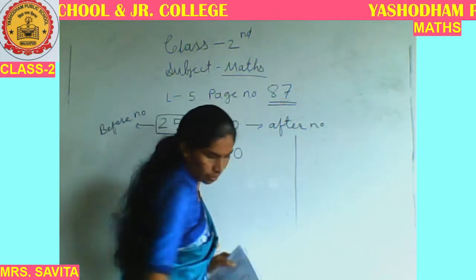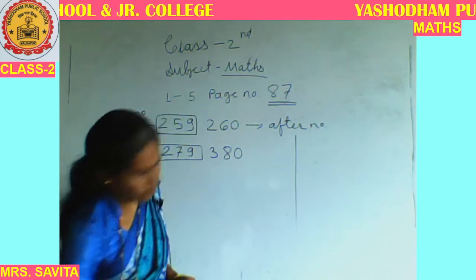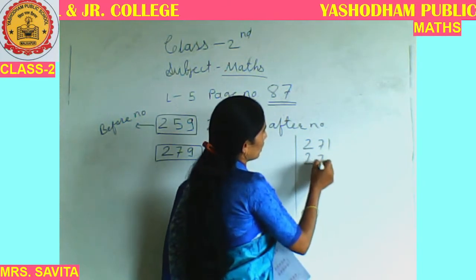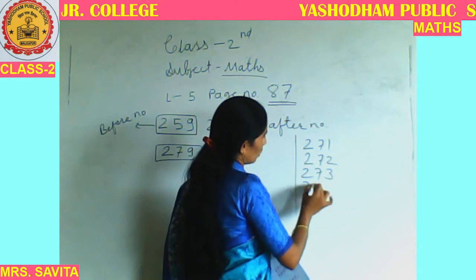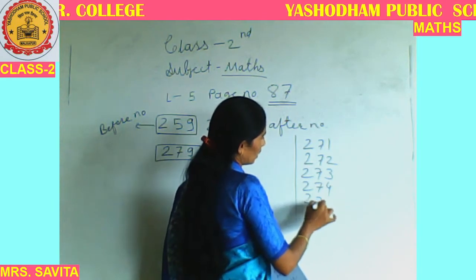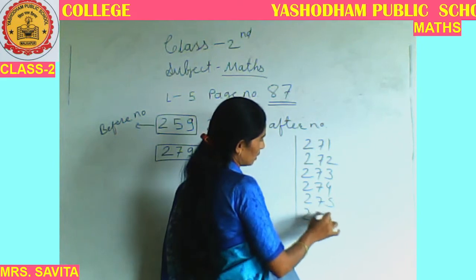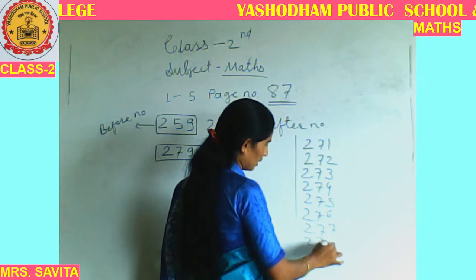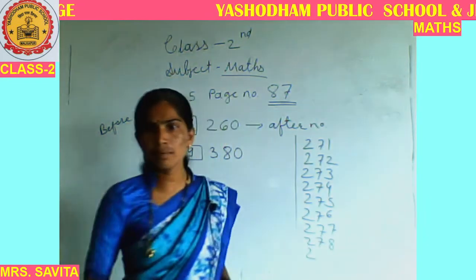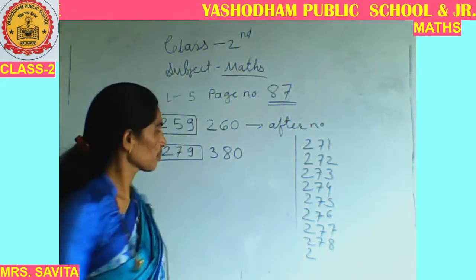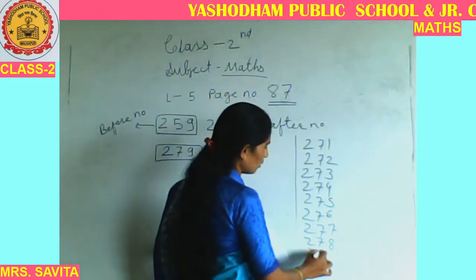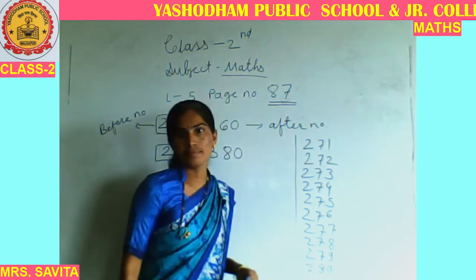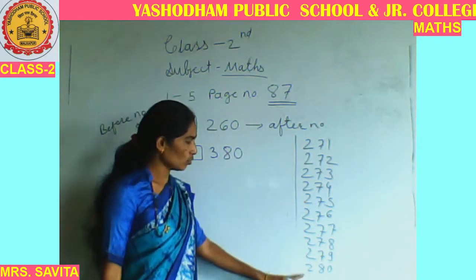Let me write a sequence starting from 271: 271, 272, 273, 274, 275, 276, 277, 278, 279, then 280 will come. So the last number shown is 280.